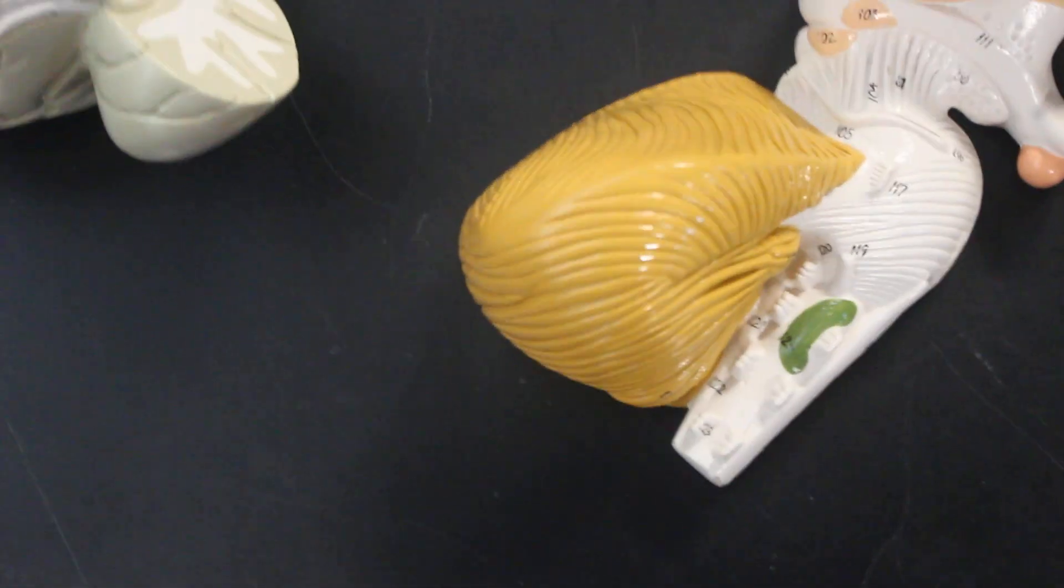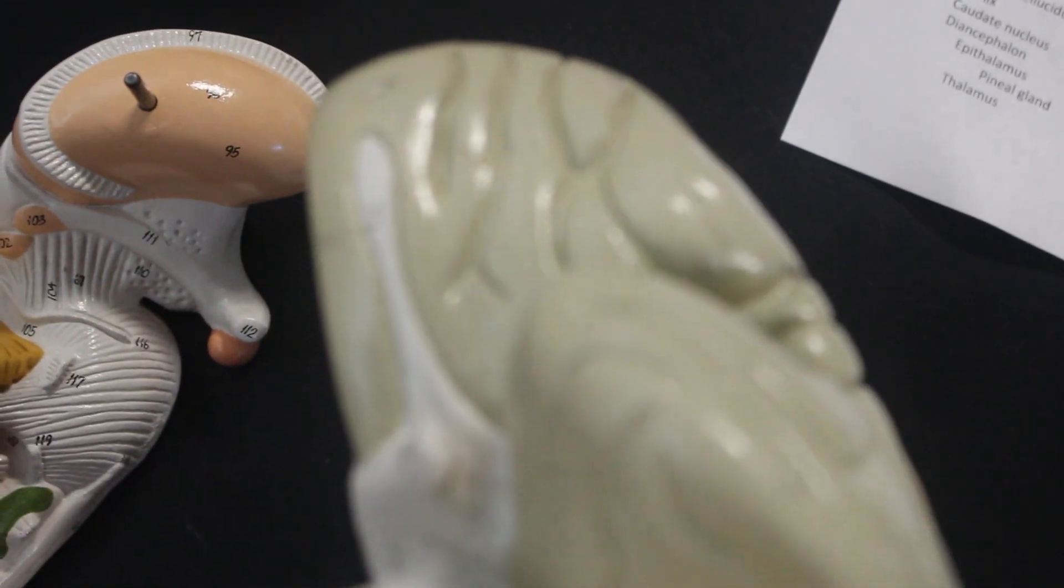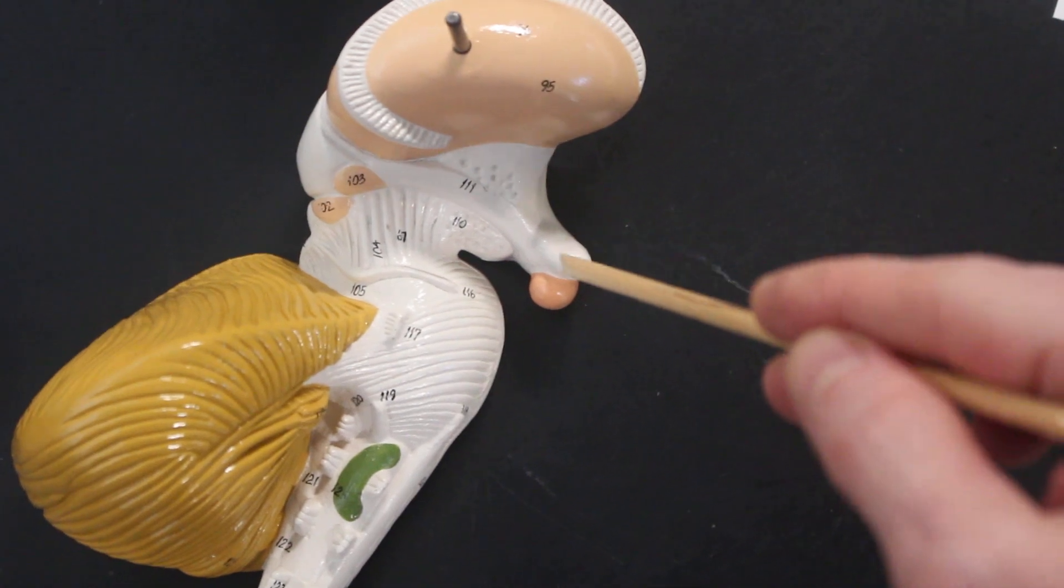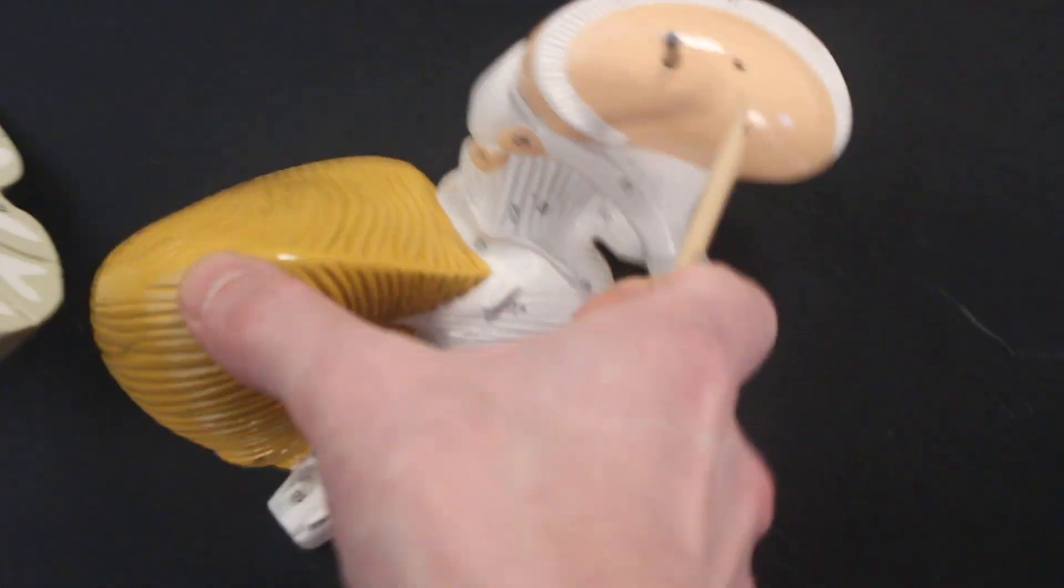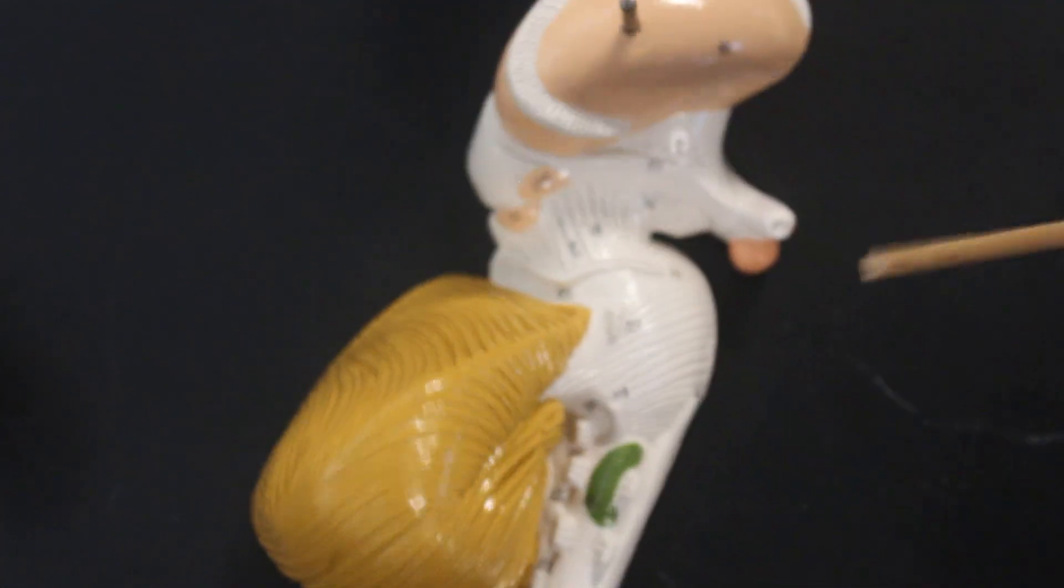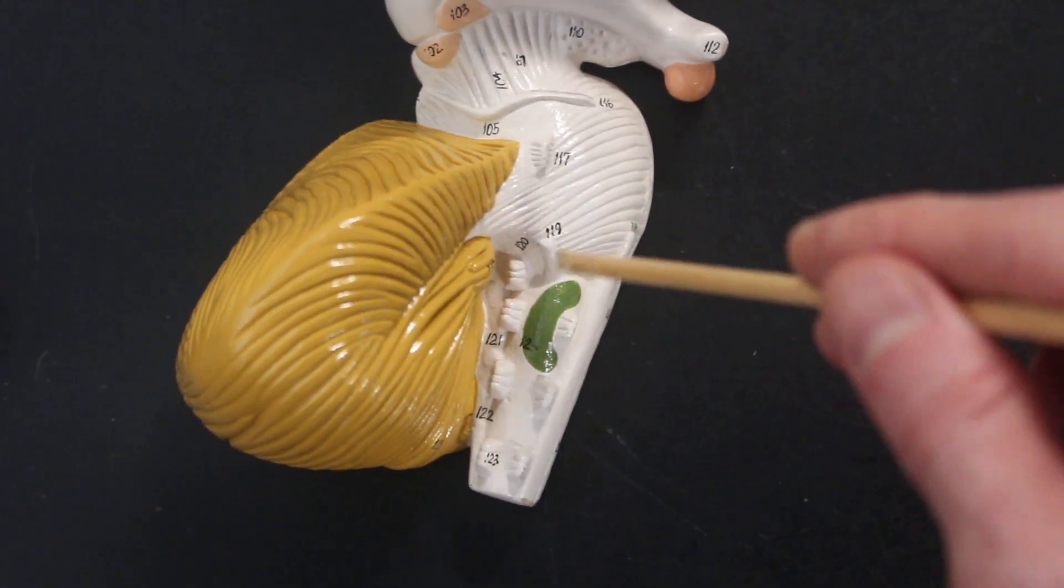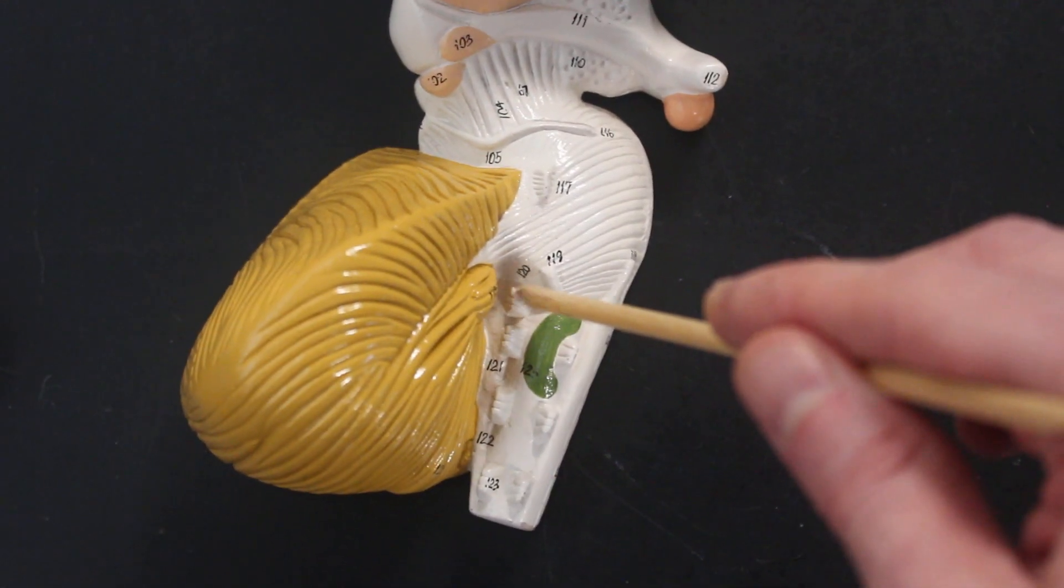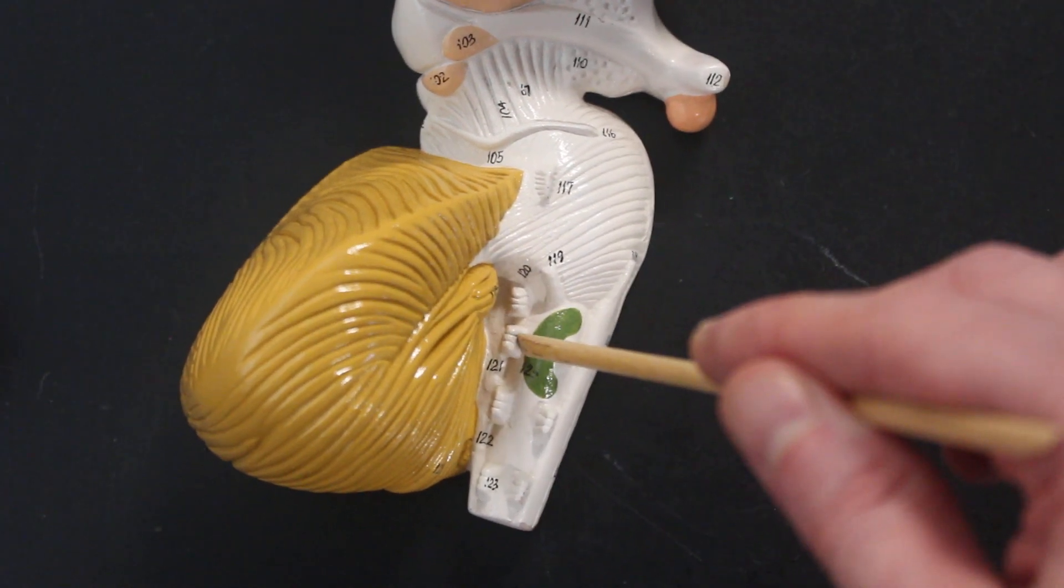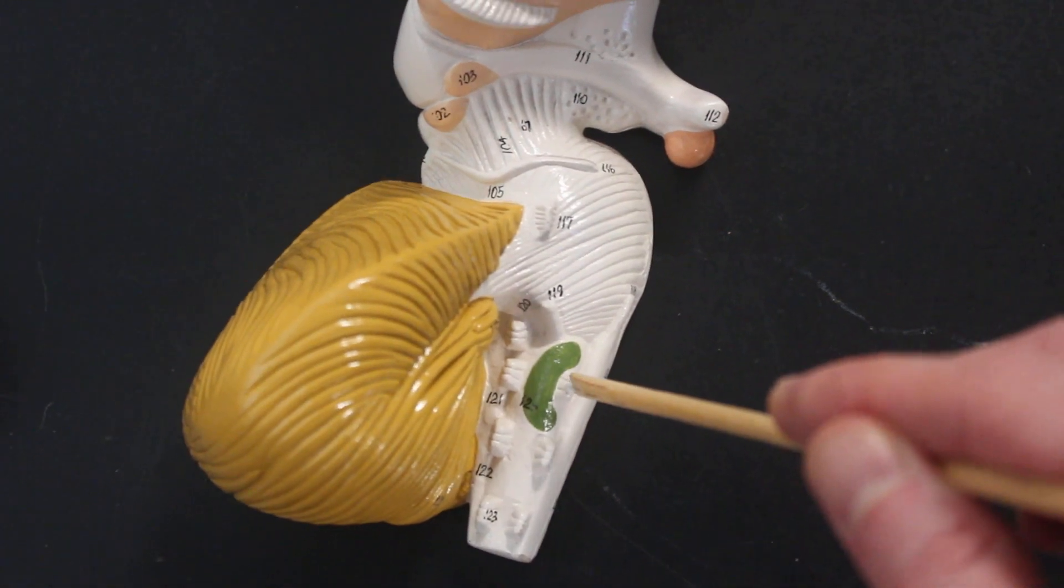So again, 12 nerves. Nerve one is the olfactory bulb and olfactory tract. Nerve two, this is the optic nerve leading to the optic chiasm. On the other side here, the oculomotor nerve right under the mammillary body, trochlear nerve, trigeminal nerve, abducens nerve, facial nerve, vestibulocochlear nerve, glossopharyngeal nerve, vagus nerve, accessory nerve, and hypoglossal nerve.